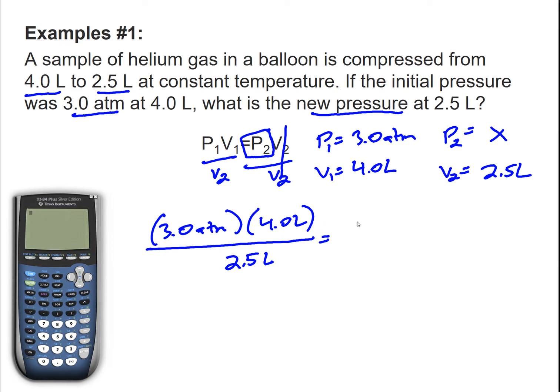Now I'm going to use my calculator to solve. I have 3.0 times 4.0 and then I divide that by 2.5 and I get an answer of 4.8 atm.